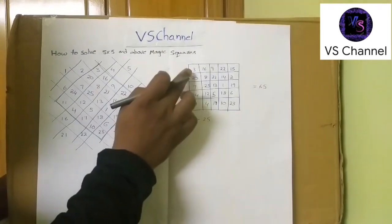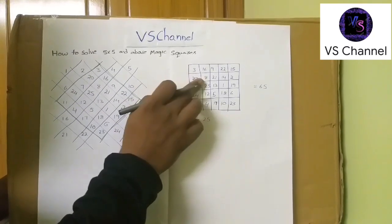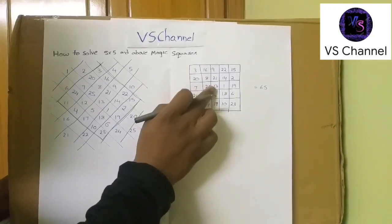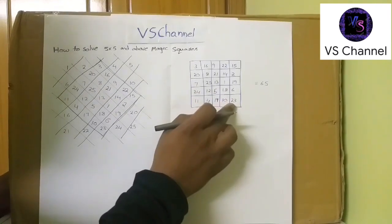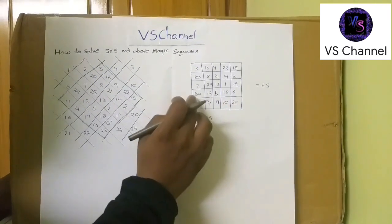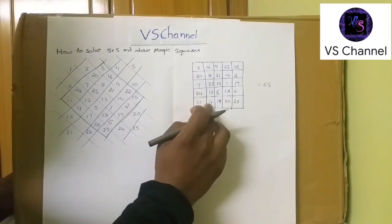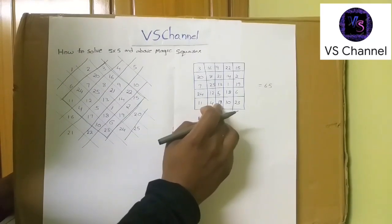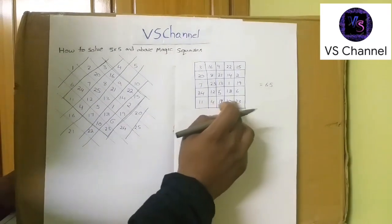Now we can go diagonal wise. 3, 8, 11, 13, 24, 18, 42 plus 23, 65. Now we can see row wise. 11, 4, 15, 15 plus 17, 32, 42, 65.